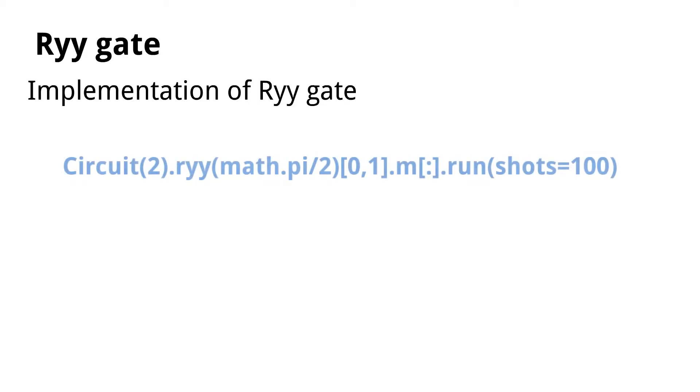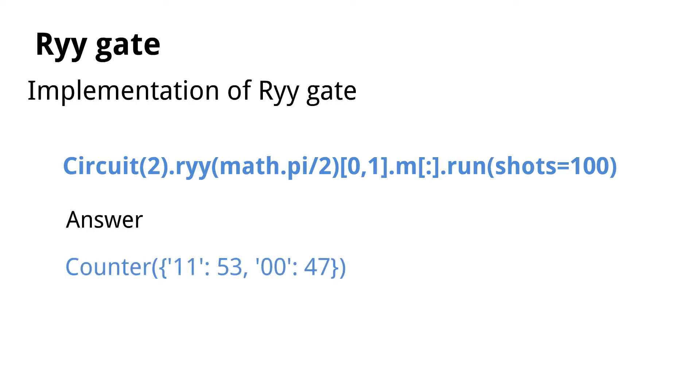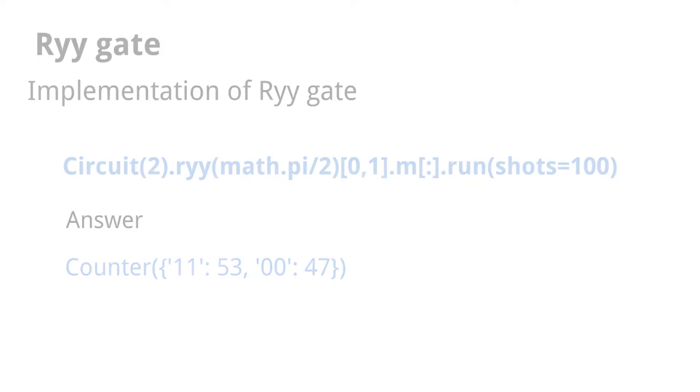Now let us move on to the implementation of this code. By the following code we are able to implement the RYY gate, and when we run the code we will get the following as the answer.